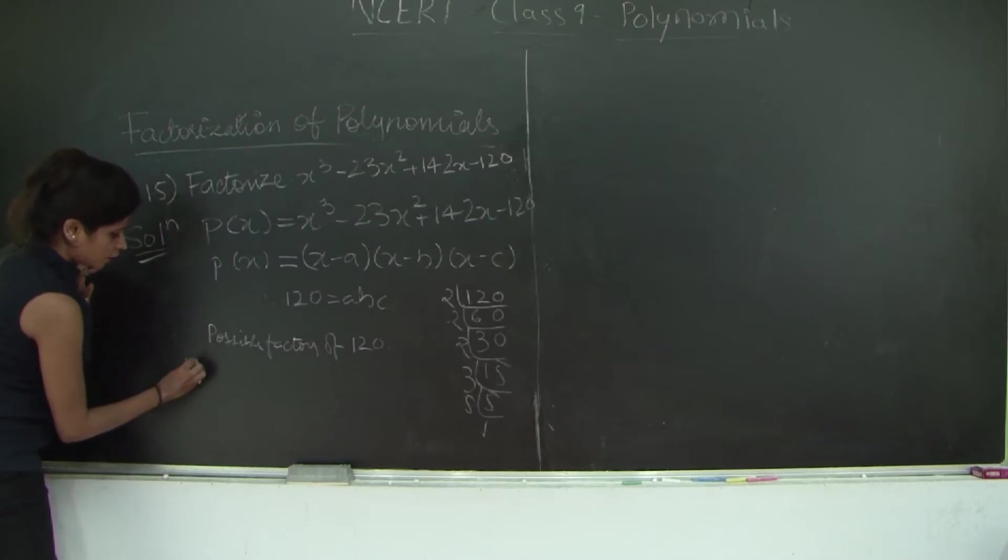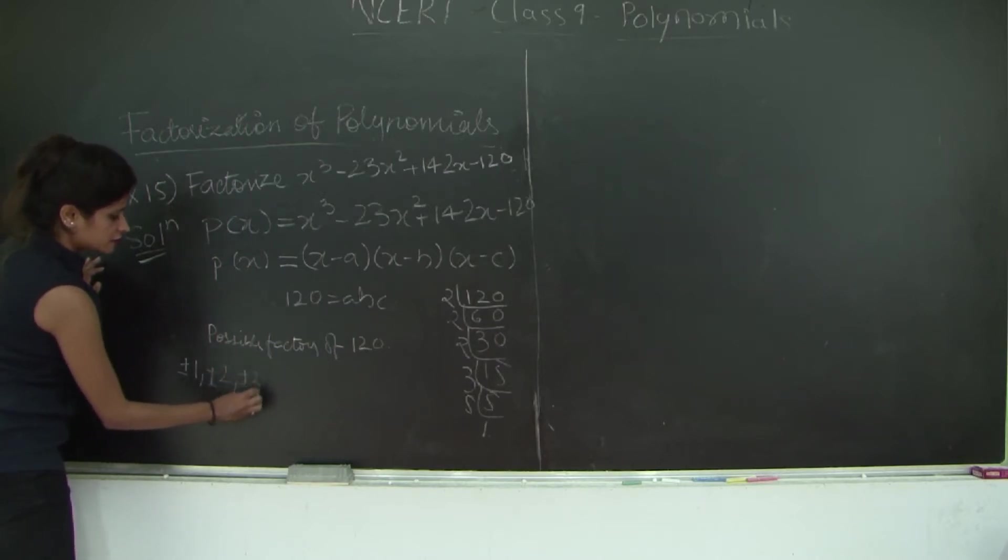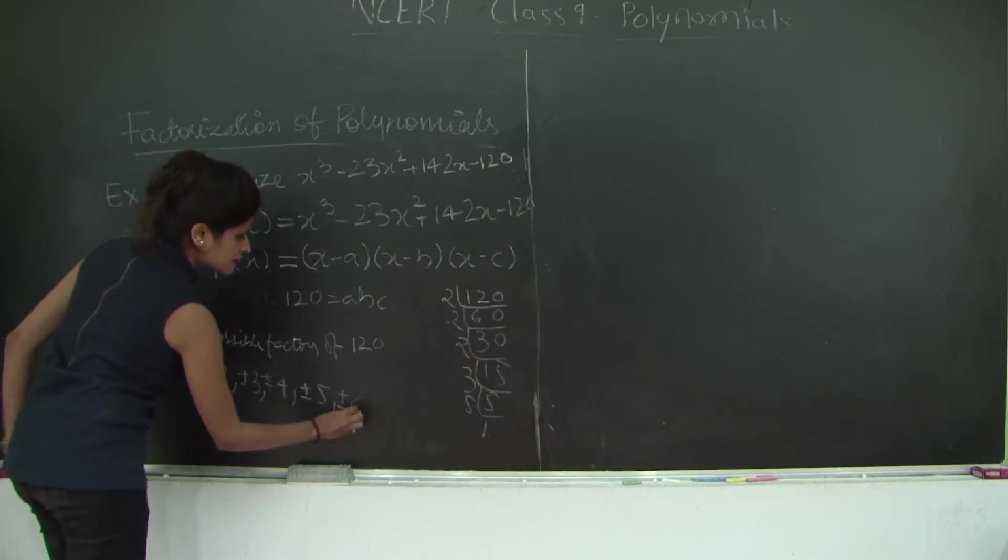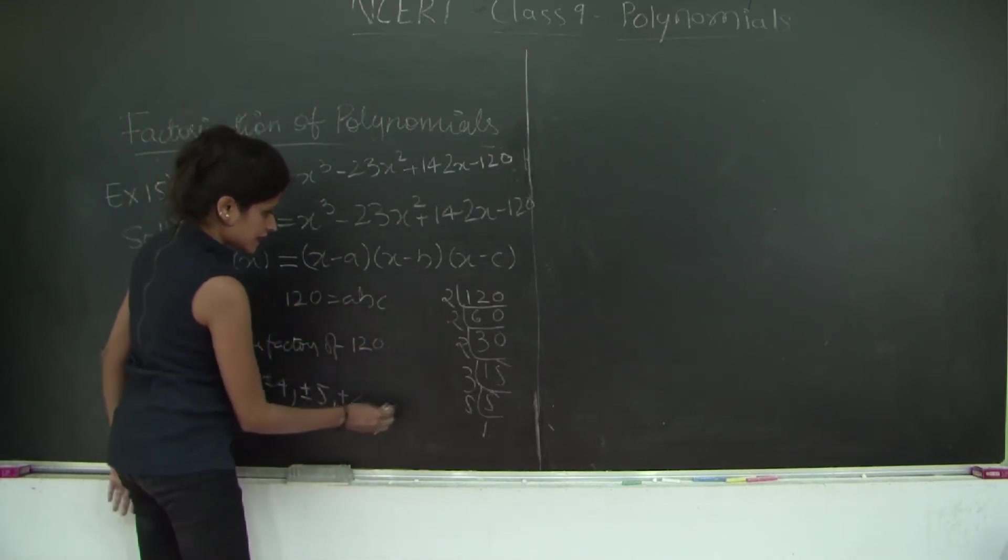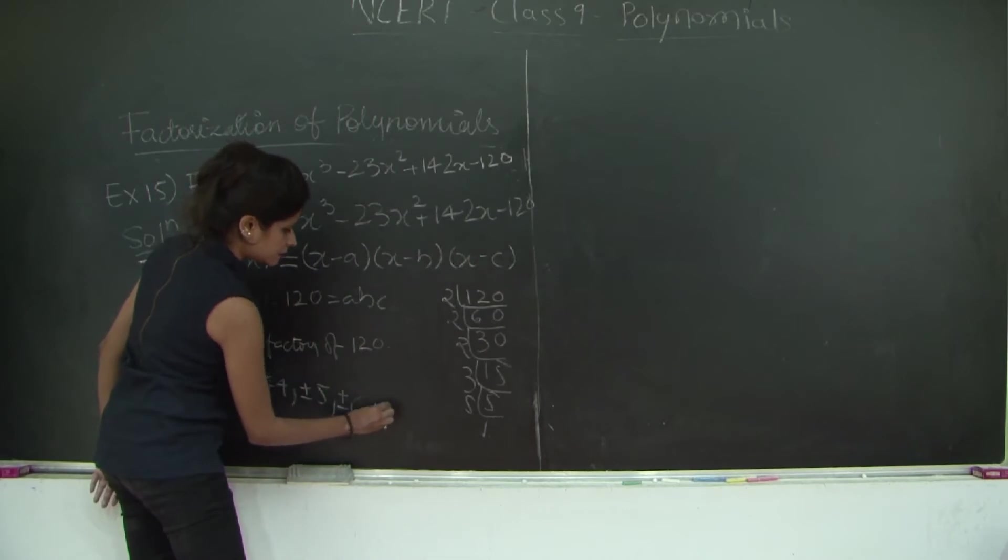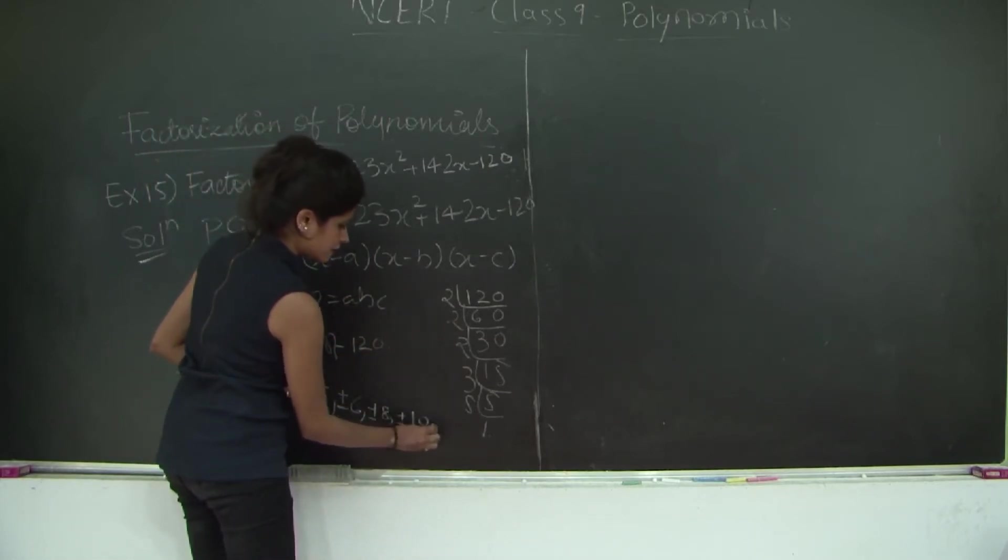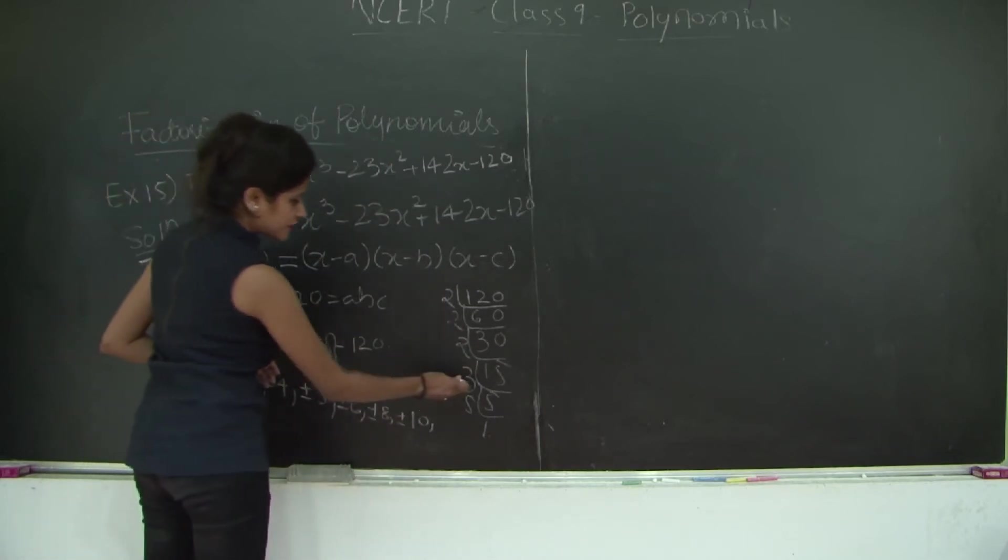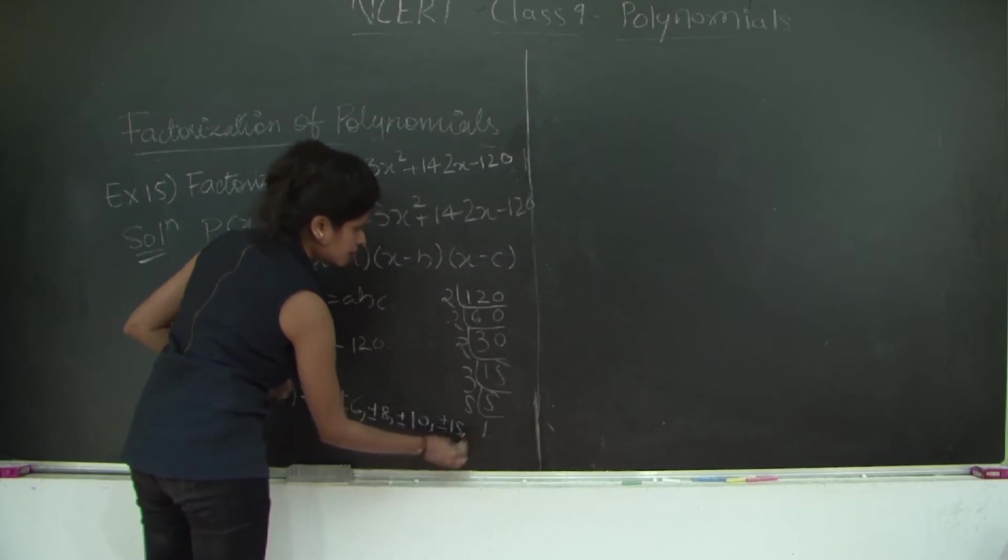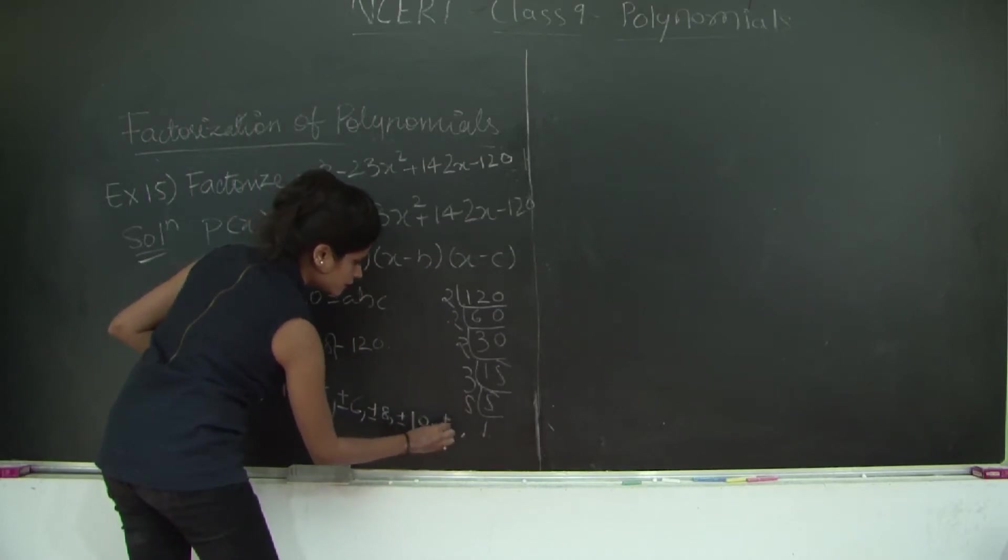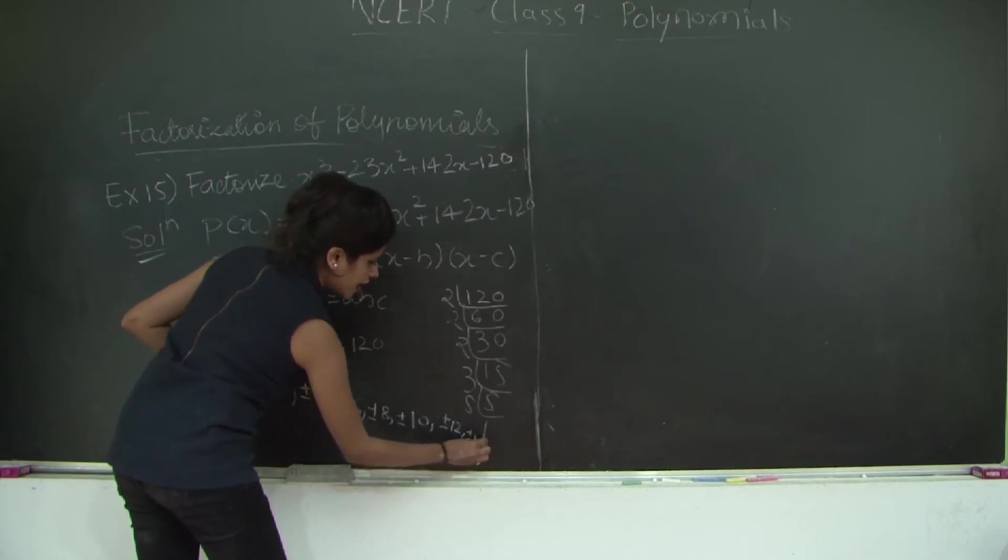The possible factors are obviously ±1, ±2, ±3, ±4, ±5, ±6, there isn't any combination for 7, so not 7. You have ±8, you don't even have a combination for 9, so not 9, ±10, 5 × 2 = 10. How about 15? Yes, ±15, you even have 12, ±12, ±15, and so on.